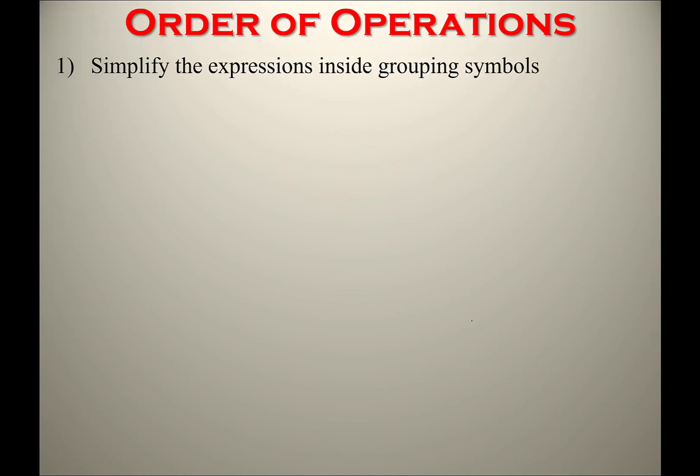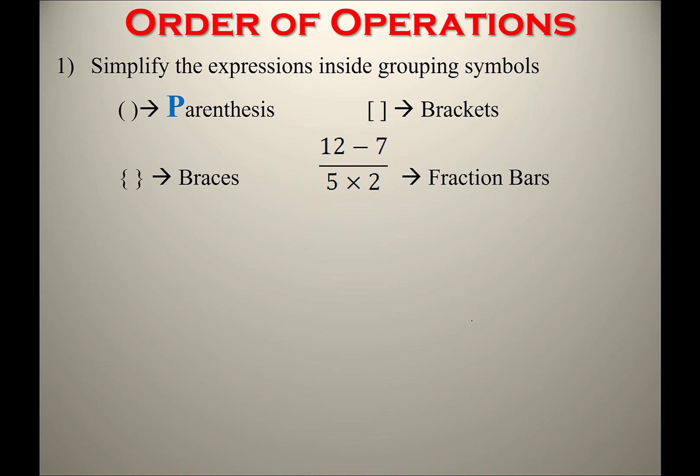The order of operations has an acronym and a saying you may remember. The first step is completing the grouping symbols. In addition to parentheses, we now have brackets, which are used when there are multiple sets of grouping symbols. Braces exist but will be used for other notation in this class. Something perhaps new is the fraction bar, which acts as a grouping symbol separating the numerator and denominator, so you simplify each side before doing the division.